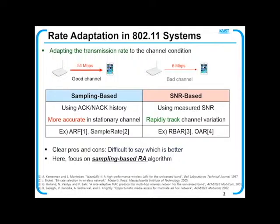Whereas the SNR-based algorithm uses measured SNR values. It is known that the sampling-based algorithm is more accurate in the stationary channel, while the SNR-based algorithm can rapidly track channel variation.